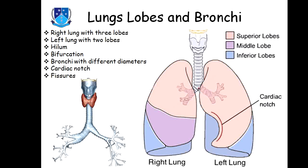The right bronchus has a larger diameter compared to the left one. The length of the right bronchus is also somewhat greater than the left. This is because the right lung is larger in size, while the left lung is smaller. The right lung has a large number of lobes and segments.